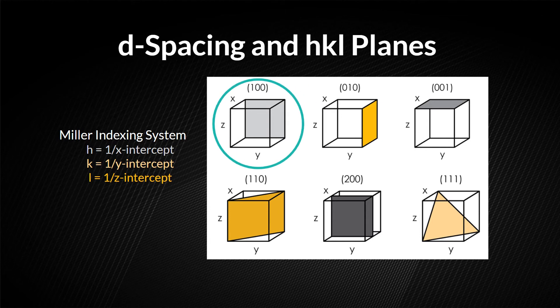For example, in a cube, the 100 refers to a plane that intersects the X-axis. This is equivalent to one of the faces of the cube.